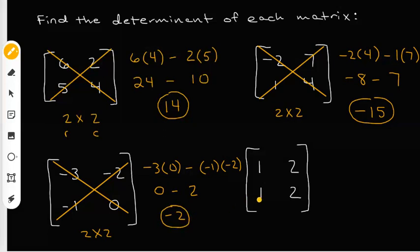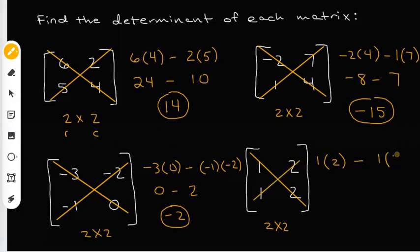Now for the last one, I have to find the determinant of this two by two. I start with the main diagonal and pick up one and two — that's what I multiply first. Put the subtraction sign in the middle, then use the counter diagonal to get one and two. One times two gives me two, minus one times two which also gives me two, and two minus two gives me zero. So the determinant for this one is zero.